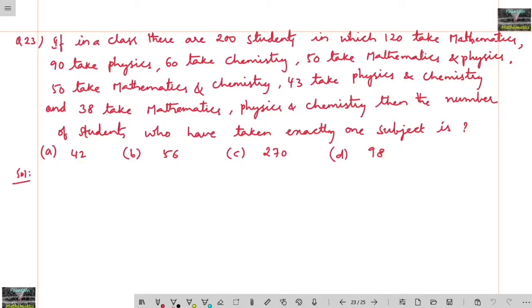If in a class there are 200 students in which 120 take mathematics - let me write mathematics, I'll write M. n(M) equals 120, number of physics equals 90, and number of chemistry equals 60. And number who take maths and physics...